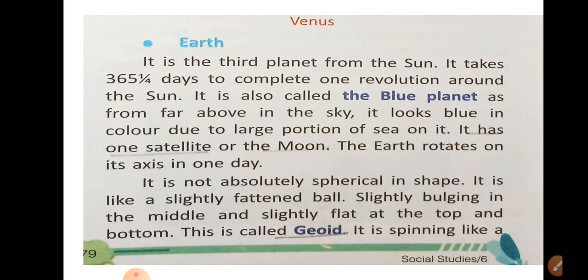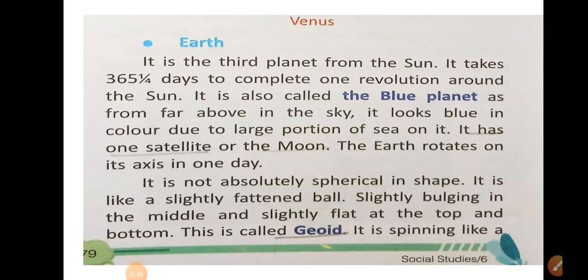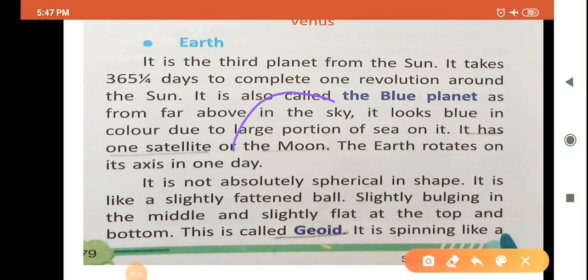Earth has one satellite — the moon. The earth rotates on its axis in one day. It is not absolutely spherical in shape; it is a slightly flattened ball, slightly bulging in the middle and slightly flat at the top and bottom.